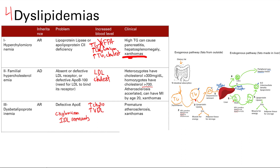The clinical complications of dysbetalipoproteinemia include high cholesterol, high LDL, premature atherosclerosis, and xanthomas. Xanthomas keep showing up across these dyslipidemias — they are accumulations of high lipids in the skin.